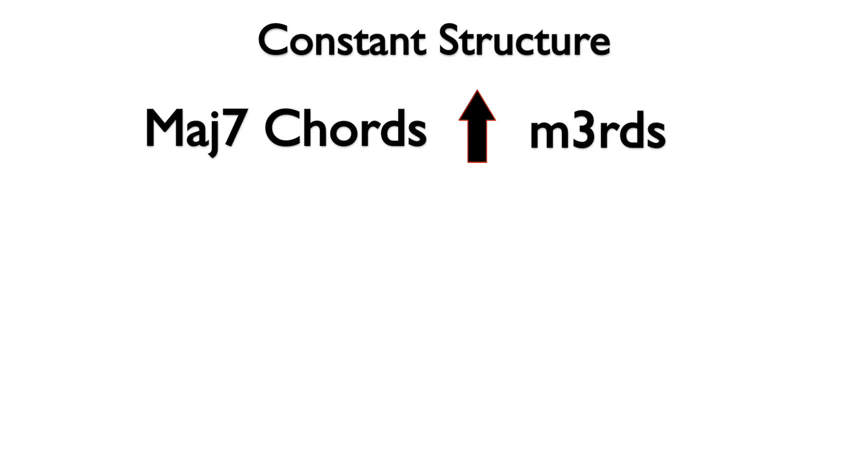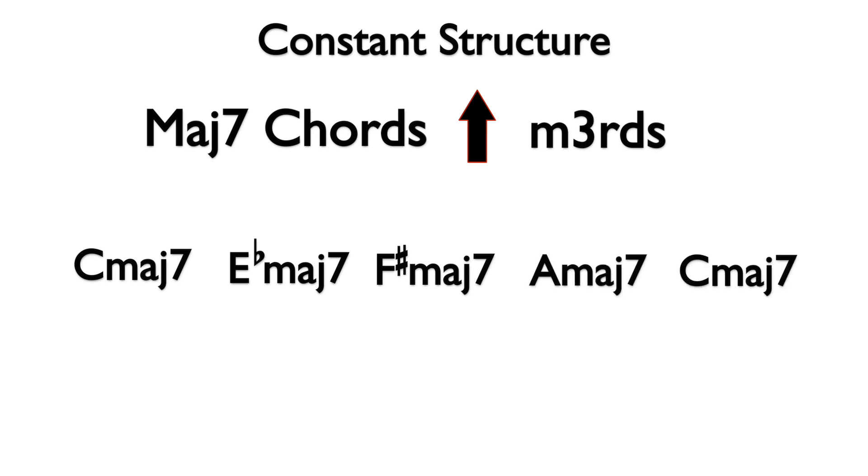Here is an example using major 7th chords in minor 3rds: C major 7, E flat major 7, F sharp major 7, A major 7, C major 7.